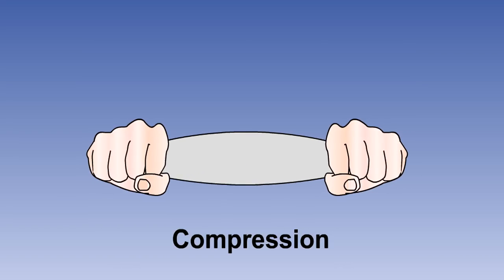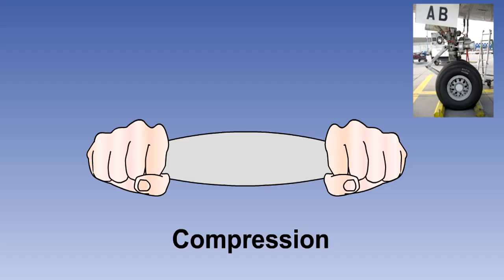Compressive loads are the opposite of tensile loads and tend to shorten structural members. Members subject to compressive loads are said to be under compression. Components designed to resist compressive loads are known as struts. You will find numerous examples of struts in an aircraft landing gear. The primary one being the oleo pneumatic strut which takes the compressive loads on landing.